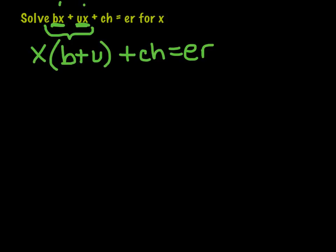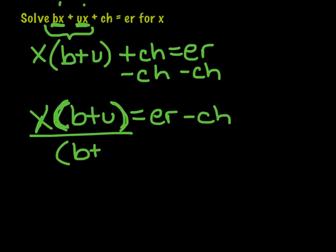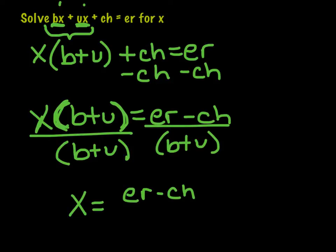So the next thing I want to move is the ch. And I have x times b plus u equals er minus ch. And then since I just want to get x by itself, and this is all a group that's being multiplied by x, I can just divide by that same group, b plus u. And divide this by b plus u. So I now have x equals er minus ch all over b plus u.